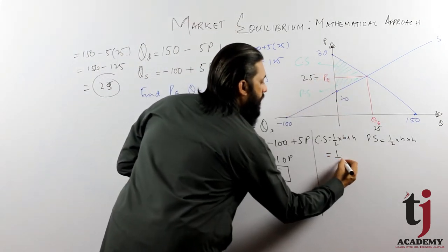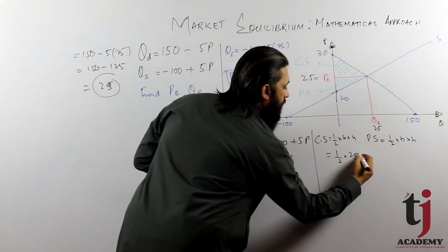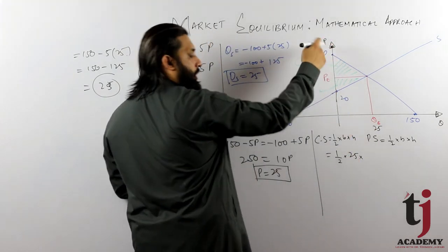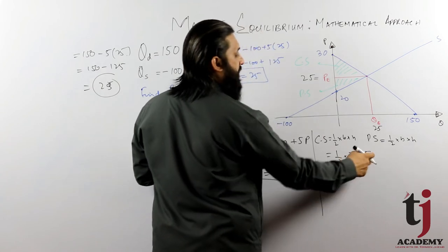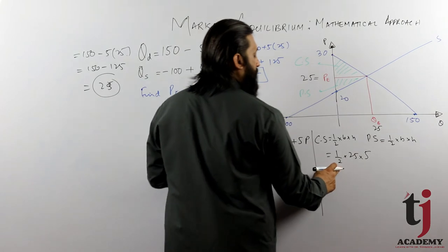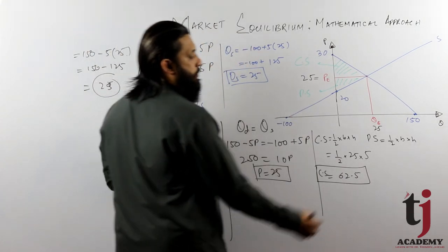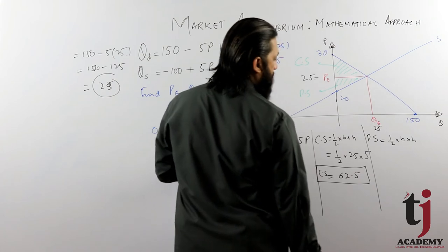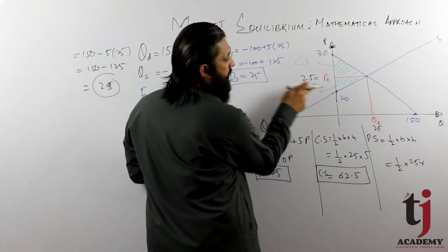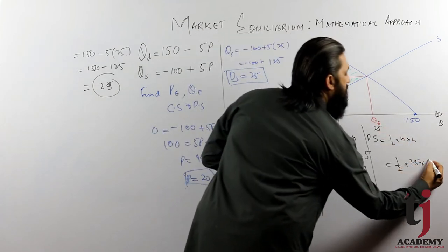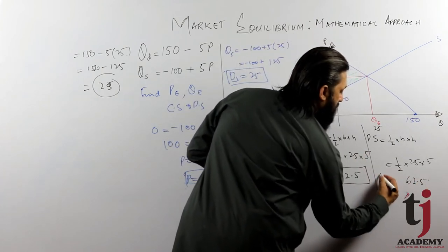दोनों right angle triangles हैं क्योंकि हमने linear function assume किया था। Formula: half base into height। Consumer surplus की base 25 है, height 25 से 30 का difference यानी 5 है। तो consumer surplus = half times 25 times 5 = 125 divided by 2 = 62.5। This is the consumer surplus।